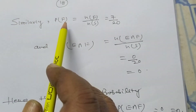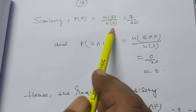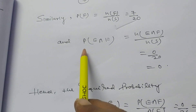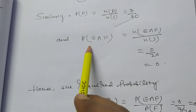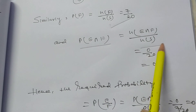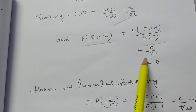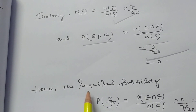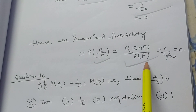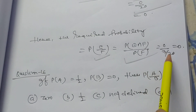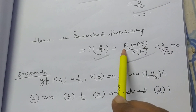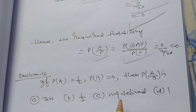P(F) = 7/20. The cardinal number of F is 0. P(E∩F) = 0. The required probability P(E|F) = P(E∩F)/P(F) = 0/(7/20) = 0. You must observe that P(A∩F) = 0 here.